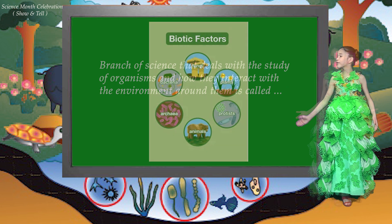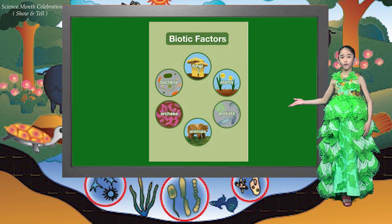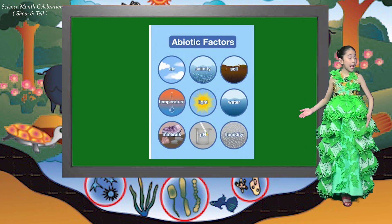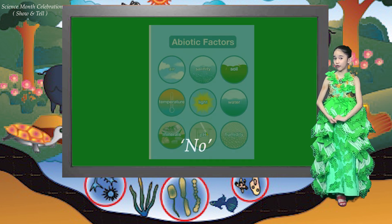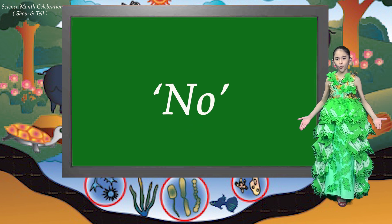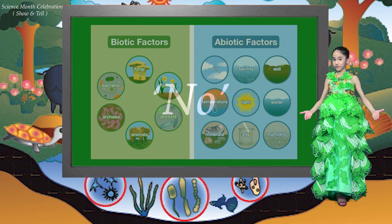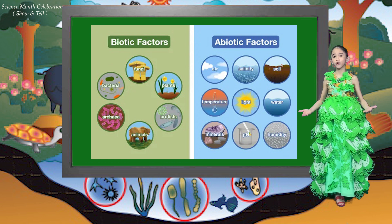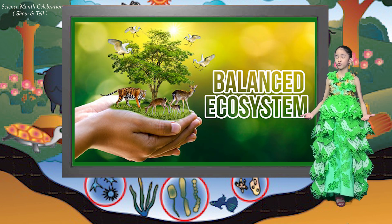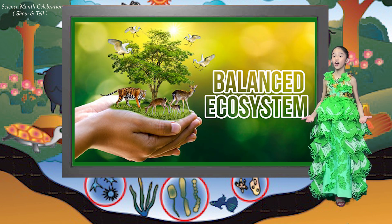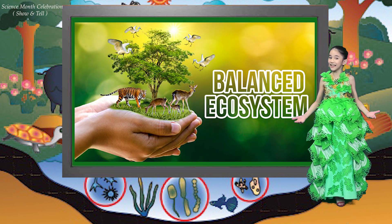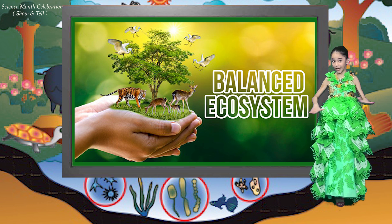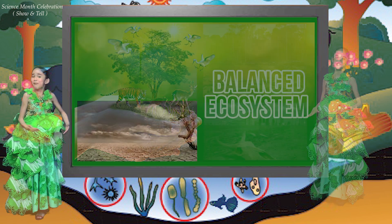Will the biotic components survive without the abiotic components? The answer is no, because both should be united. They should work together in order to achieve ecological balance and to maintain or sustain life.